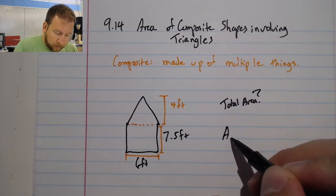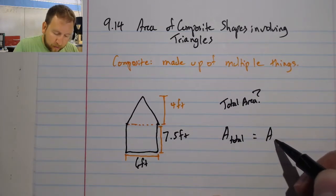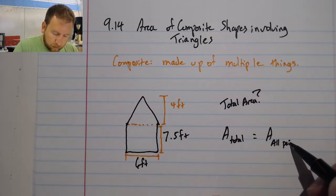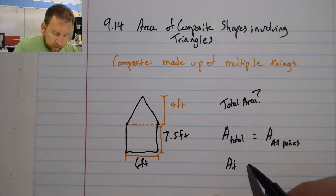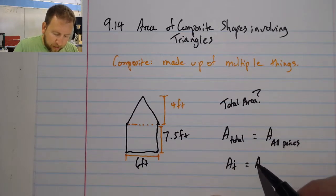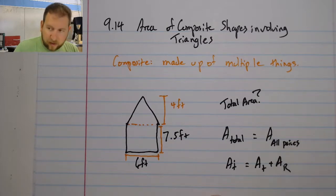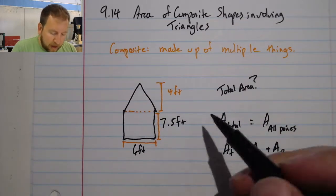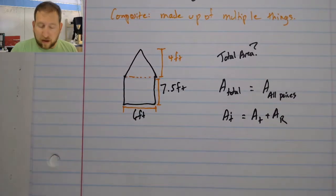And to get my total area, my area total, I'm going to add up my area of all my pieces. So in this case, my area total is going to be my area of the triangle plus the area of my rectangle. And this is going to give me my total area that I find.